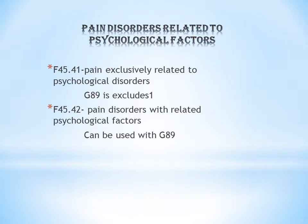The first topic is pain disorders related to psychological factors. There are mainly two codes: F45.41 and F45.42. The first one, F45.41, is pain exclusively related to psychological disorders. Here they are describing two types of pain: physical pain and psychological pain.